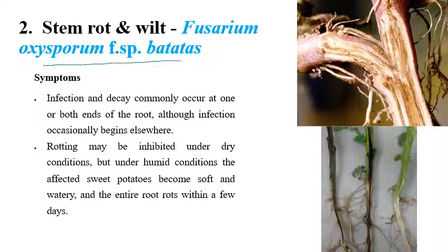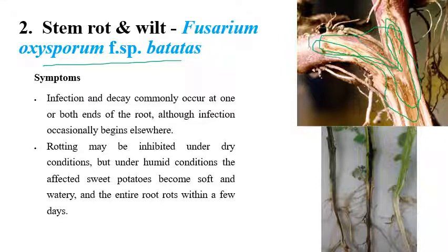The next disease is stem rot or wilt, caused by Fusarium oxysporum f. sp. batatas. As the name indicates, rotting and wilting of stems can be seen. When we cut open the stem, brown color vascular discolorations can be seen. The upper parts of affected sweet potatoes are soft and watery, and symptoms can be observed on roots as well as leaves.